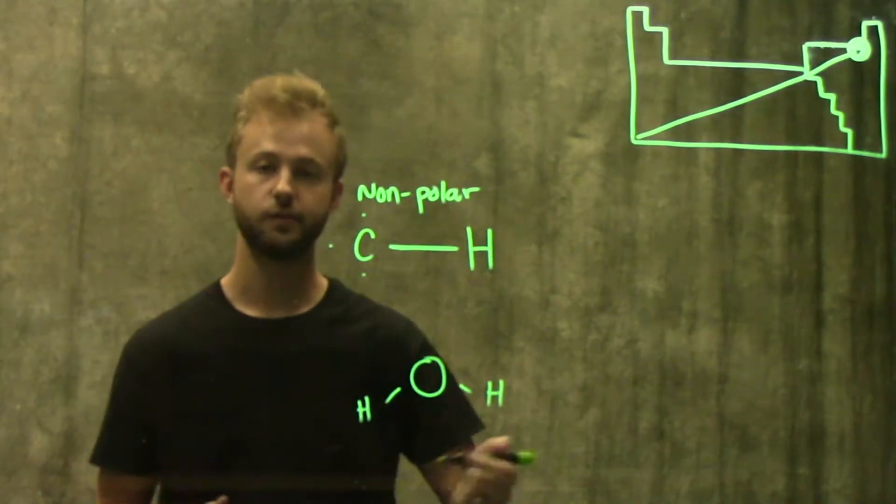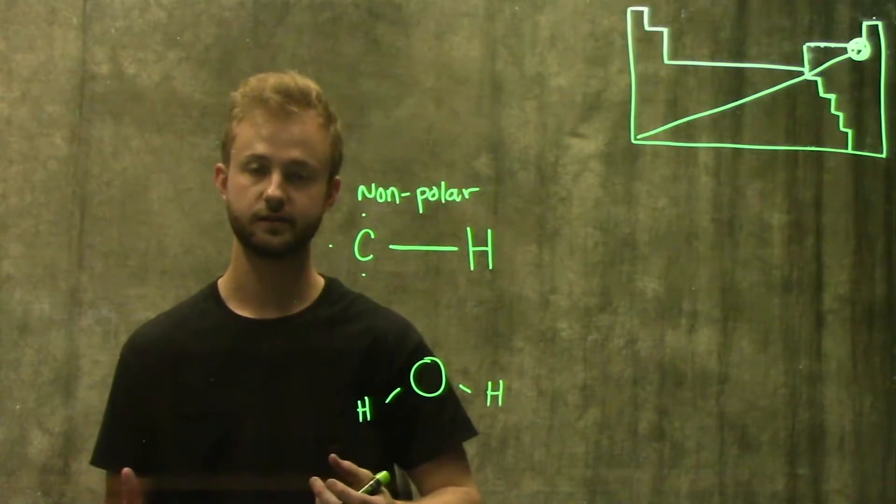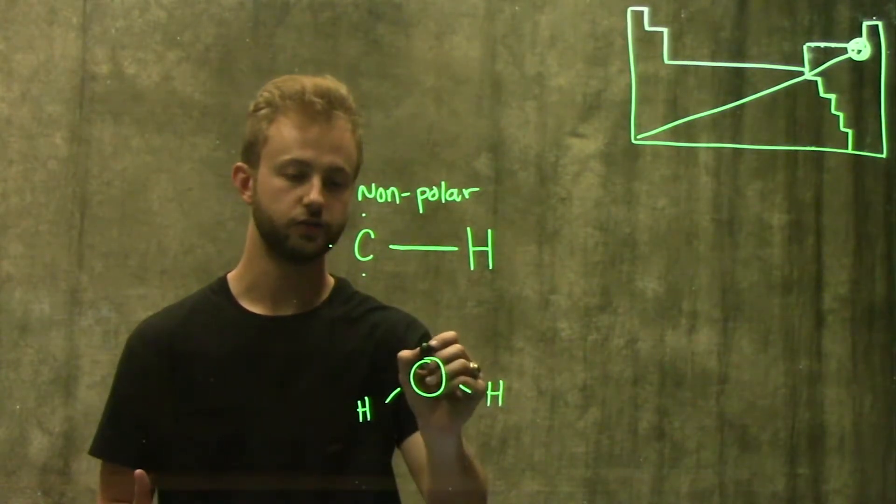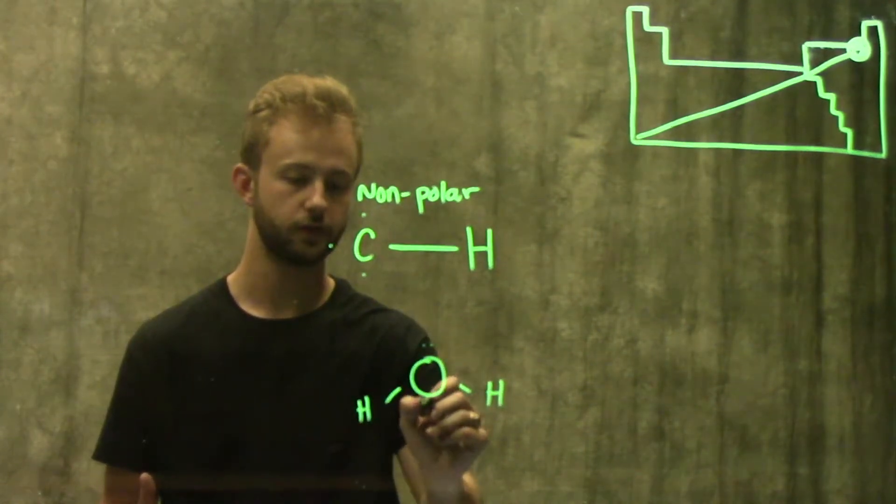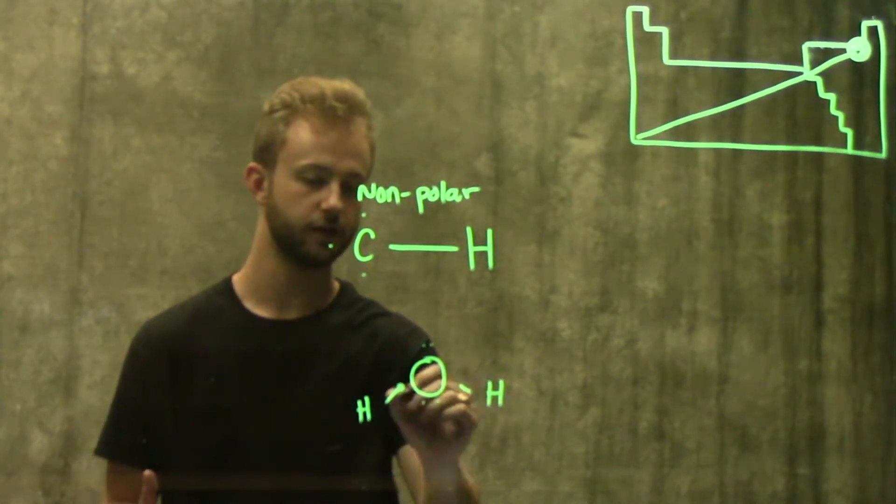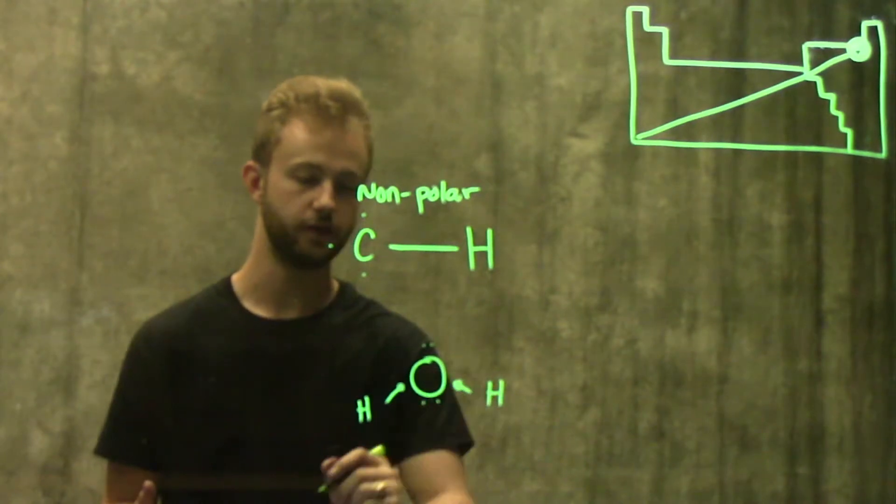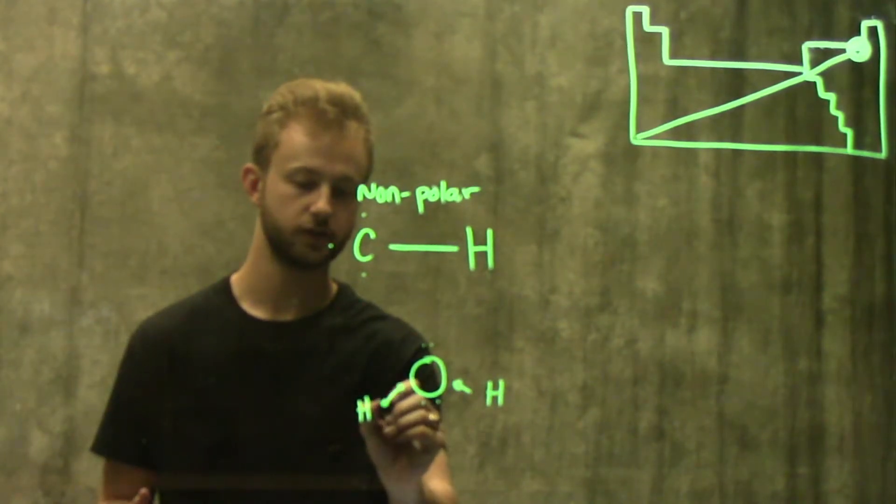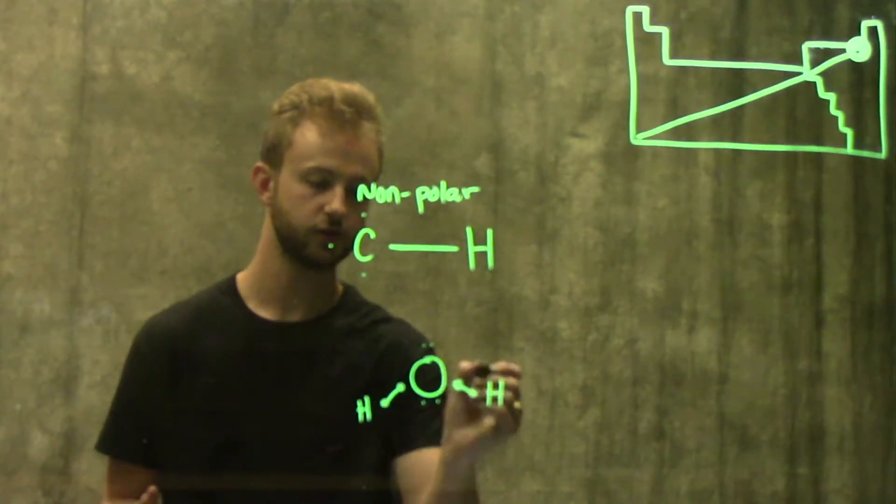Looking at the periodic table, we know oxygen has six valence electrons, so go ahead and draw those in: one, two, three, four. And then one is being shared in this bond on this side, and the other one is being shared on this side. And then hydrogen is also sharing one of its electrons.